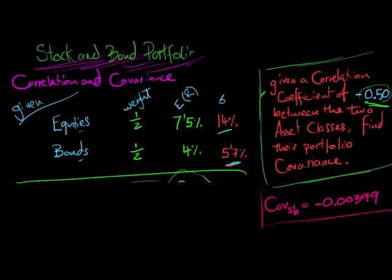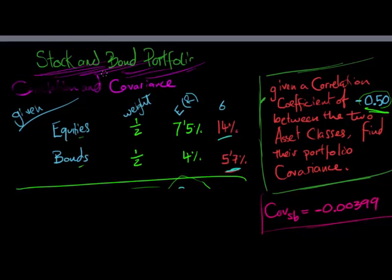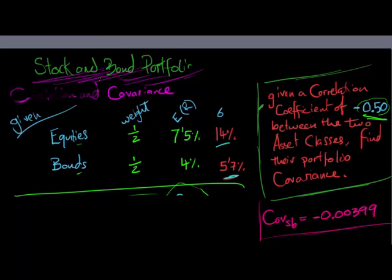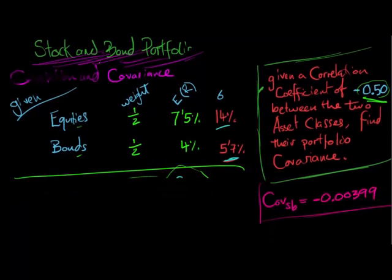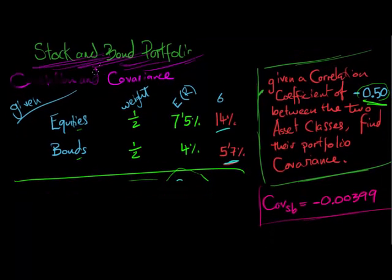Continuing on with the same stock and bond portfolio as before, now I'm going to find the expected return for the portfolio as a whole. So we know the expected return for equities and we know the expected return for bonds. We've got the weight, 50% of each. So now, given this data...